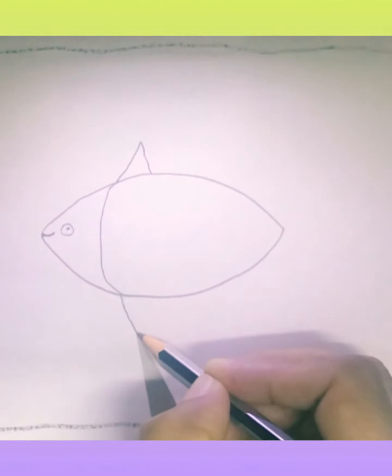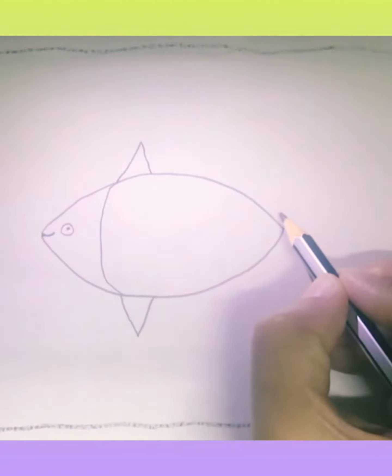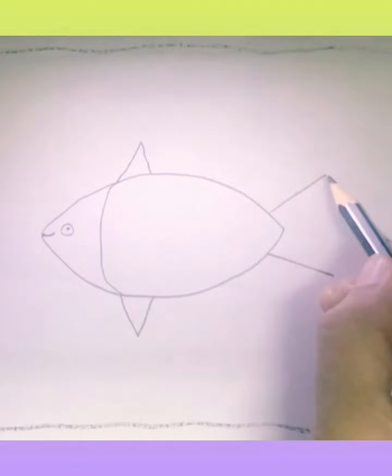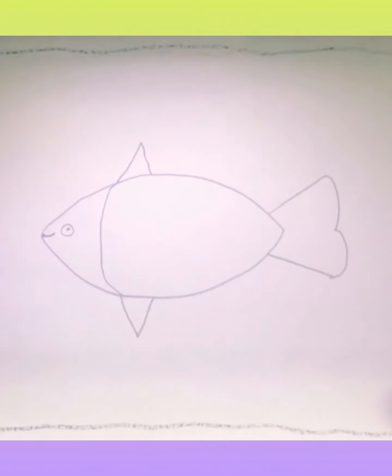Now it's turn for tail. One slanting line here, one more slanting line, and now join both the lines like this. So tail is ready.